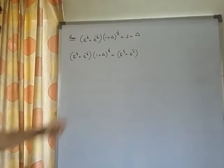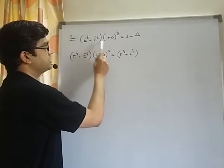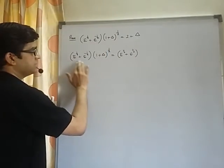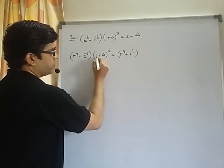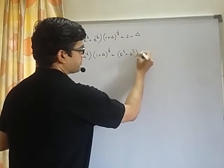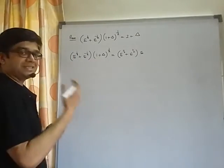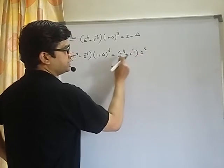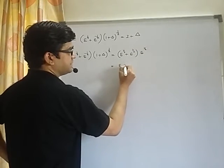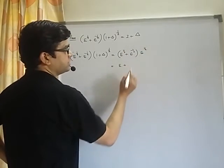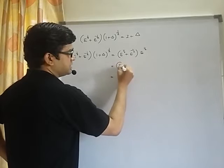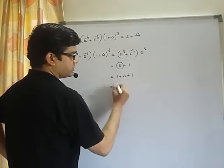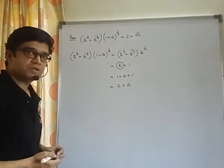The next question: prove that e^(1/2) + e^(-1/2)·(1 + δ)^(1/2) equals 2 + δ. Consider the left-hand side. Since (1 + δ) = E, we have (1 + δ)^(1/2) = E^(1/2). Opening the bracket: e^(1/2)·E^(1/2) = E, and e^(-1/2)·E^(1/2) = 1. Since E = (1 + δ), we get (1 + δ) + 1 = 2 + δ. Please note this down.